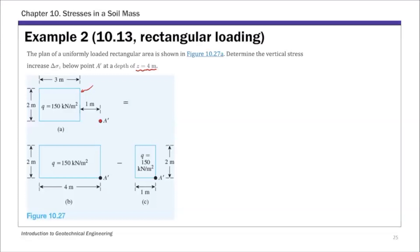For this case, the way to do this is to construct a larger rectangle — that's 4 by 2. I'll call this Rectangle 1, and the corresponding influence factor I'll call I3-1.